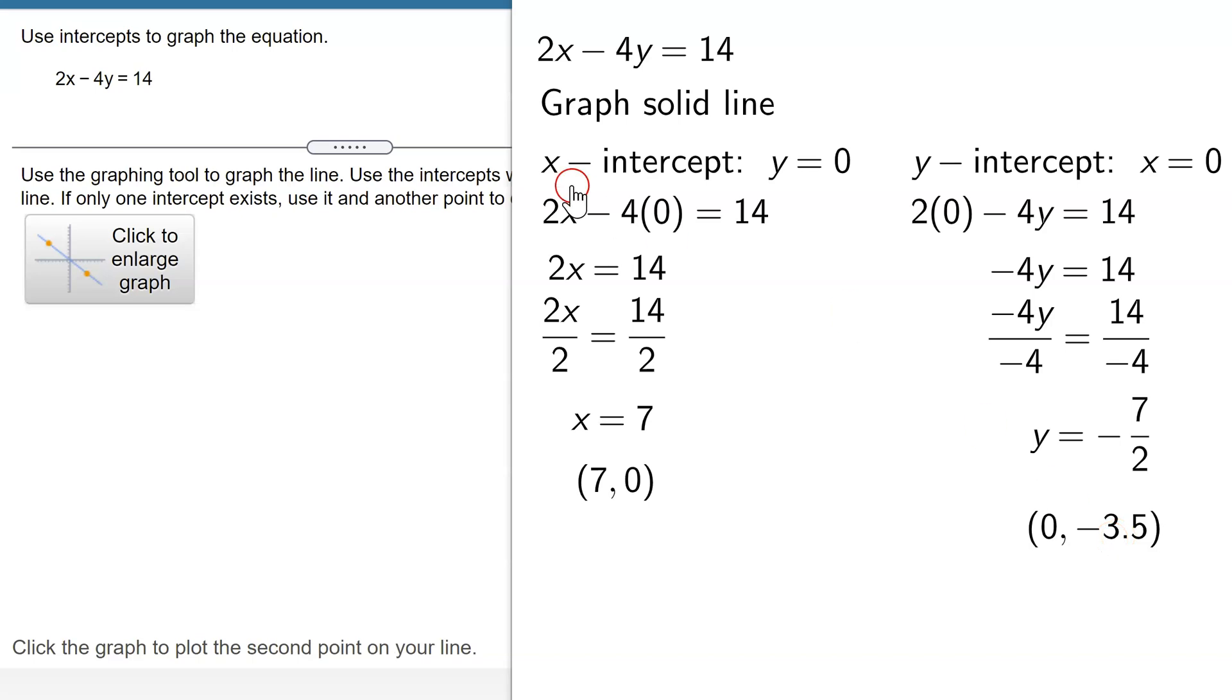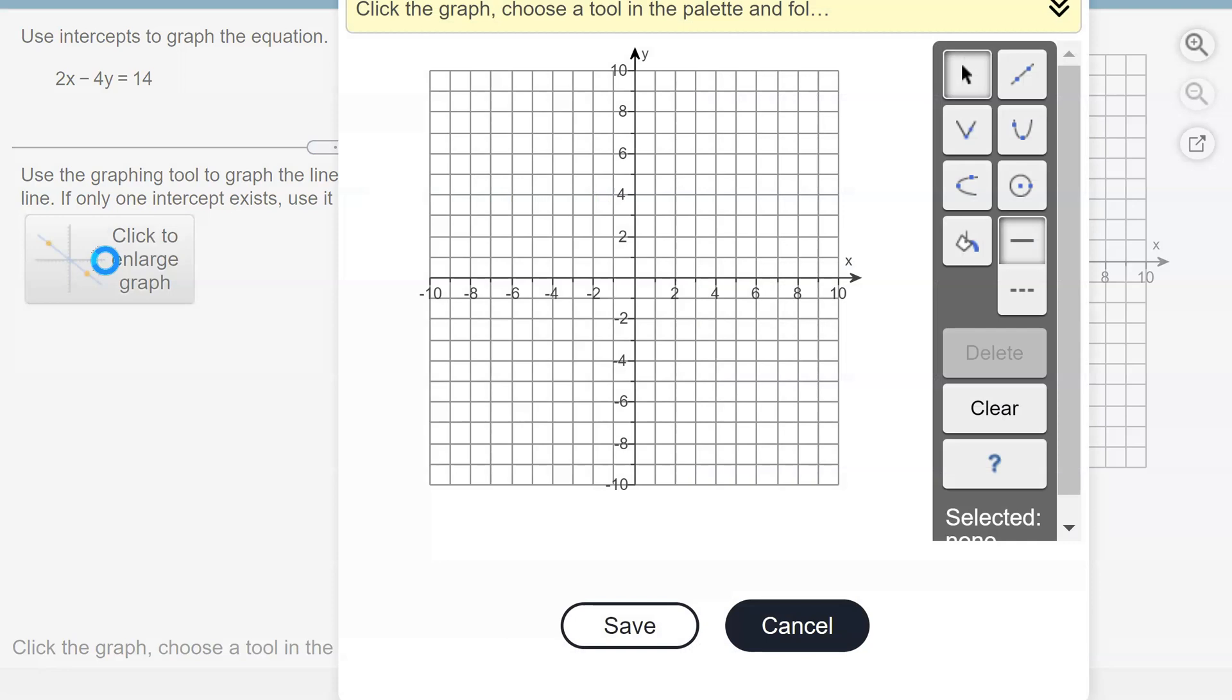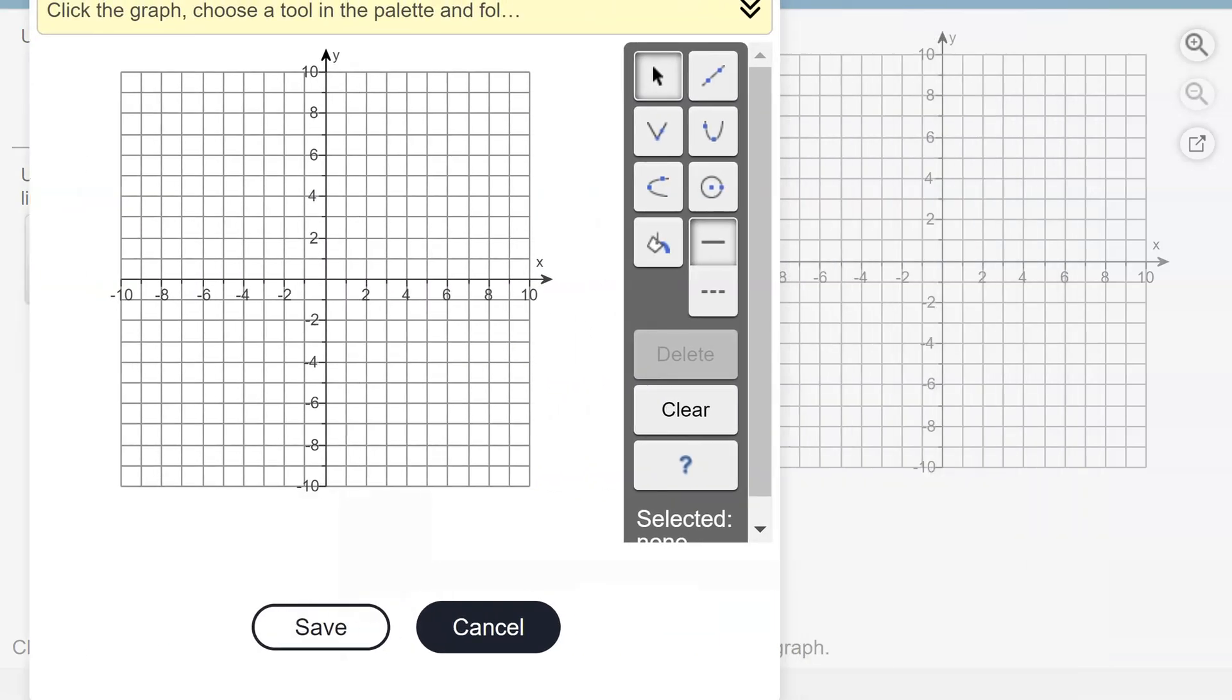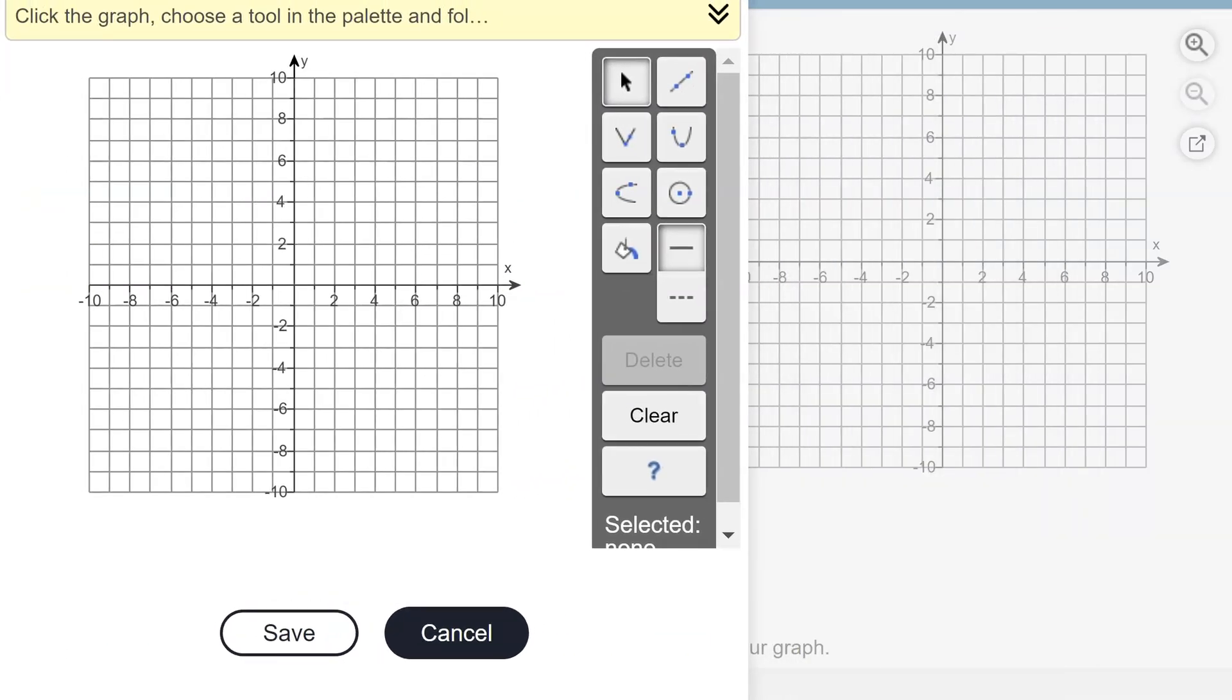So now I'm ready to graph my line. In MyMathLab, you click to enlarge the graph. I need to move my graph over a little bit. Since I'm graphing a line, use the line tool. Make sure the solid line is selected. And now I need to graph my points.